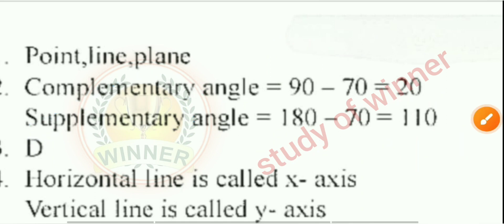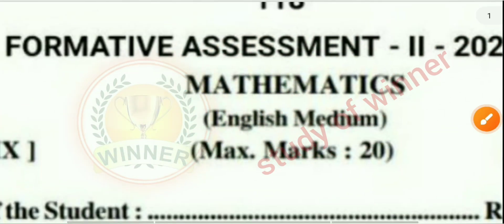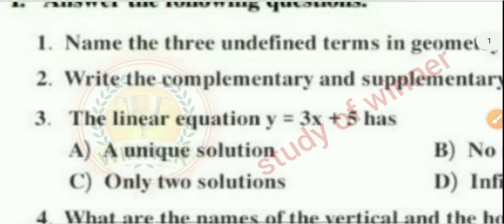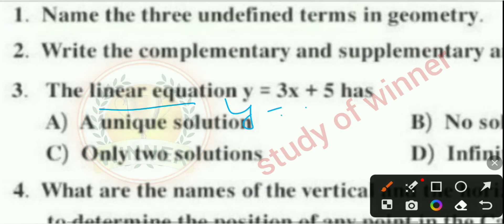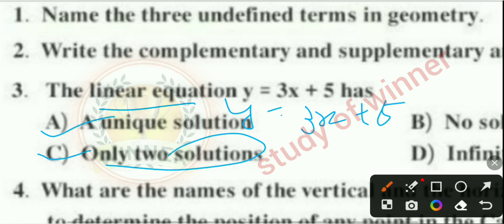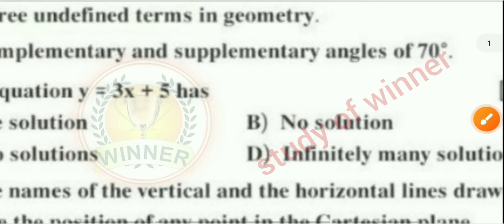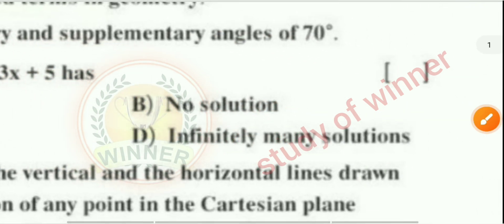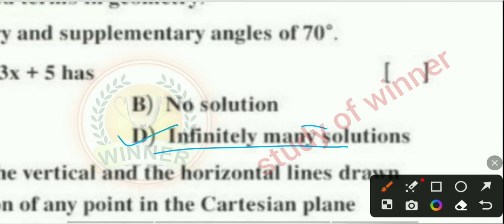Question 3: The equation 2y = 3x + 5 has — a unique solution, only two solutions, or no solution? The correct answer is option D: many solutions.